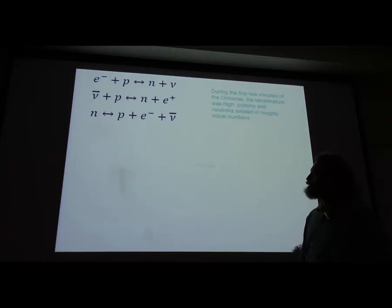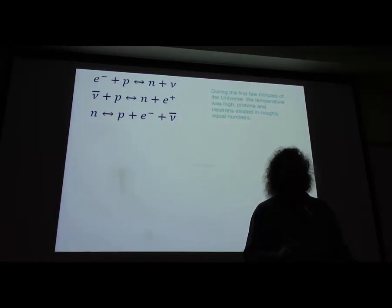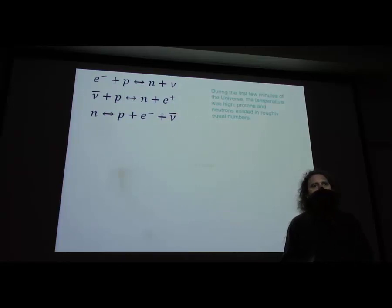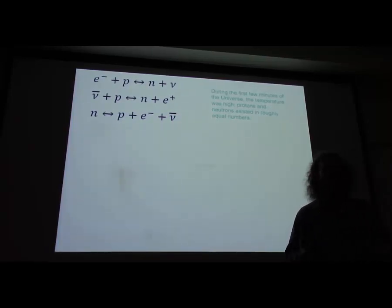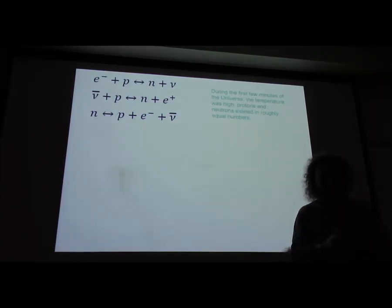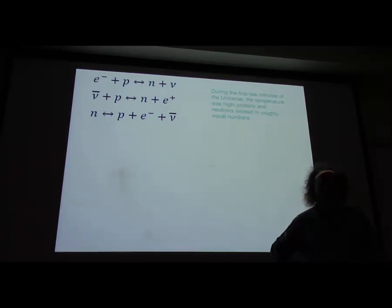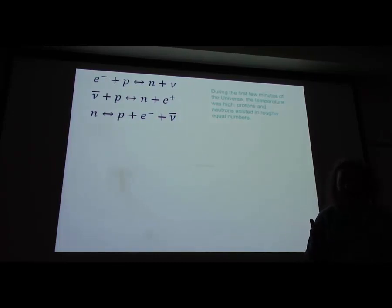The Big Bang theory is based on general relativity, Einstein's 1915 theory. Physicists realized it implies the universe began infinitesimally small and has been expanding ever since. At first there was no evidence, but in the 1920s the expansion of the universe was discovered, and later the cosmic microwave background radiation was found. That has been studied in detail, providing very strong evidence that the Big Bang model is true.